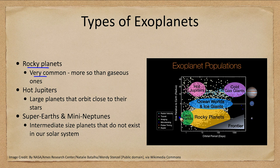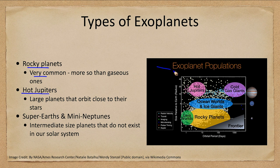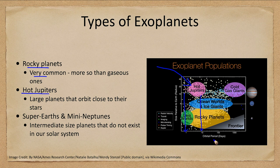Rocky planets are very common — there are a lot more rocky planets than other types, shown in yellow here. Lava worlds are similar to rocky planets but very molten. When you get up to the giant planets there are far fewer, each dot representing a planet. We also see unusual hot Jupiters up in the corner — planets that are Jupiter-sized or bigger, with orbital periods of about one to ten days, much faster than Mercury's 88-day orbit.